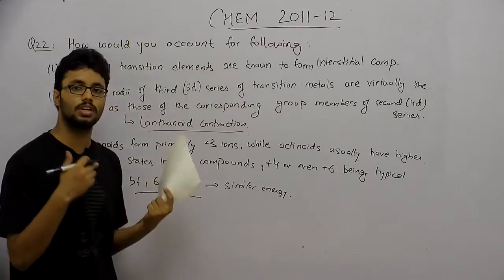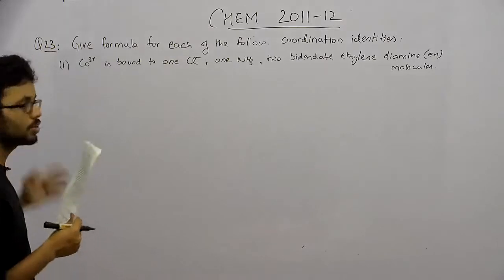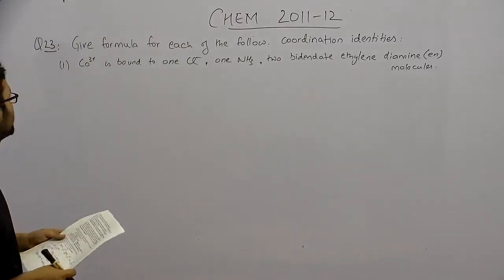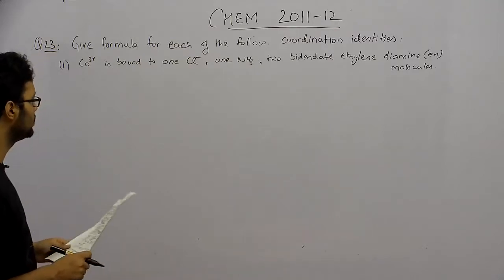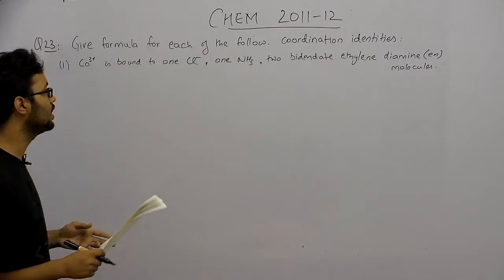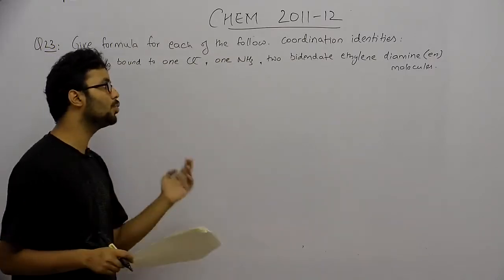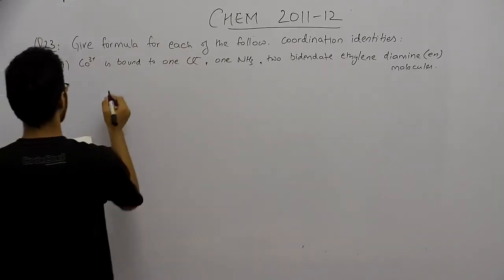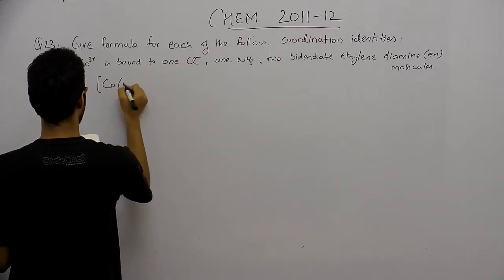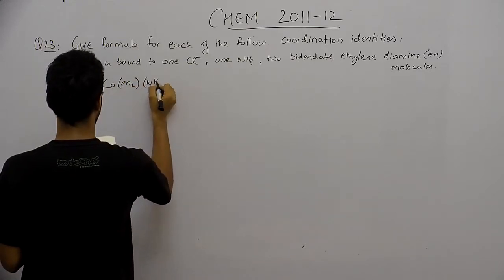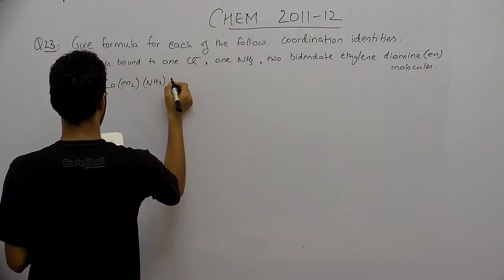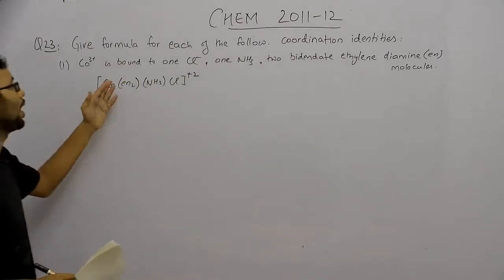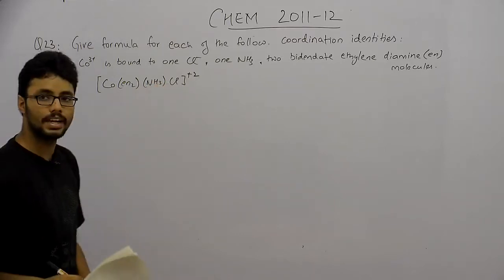Moving to question 23 — give the formula for each of the following coordination entities. The first is a cobalt 3+ ion bounded to one chlorine ion, one NH3, and two bidentate ethylene diamine molecules. We can see that the charge on cobalt is 3+ and on the chlorine ion is minus 1, so the total charge on the coordination compound is plus 2.